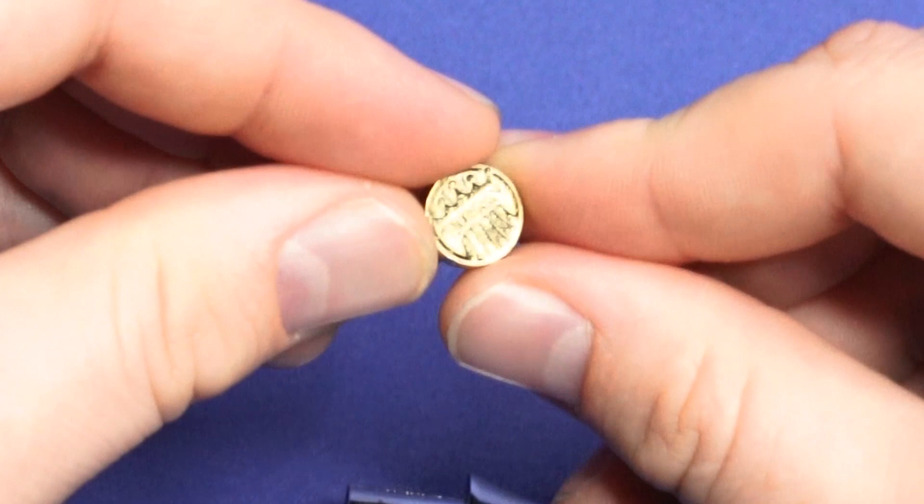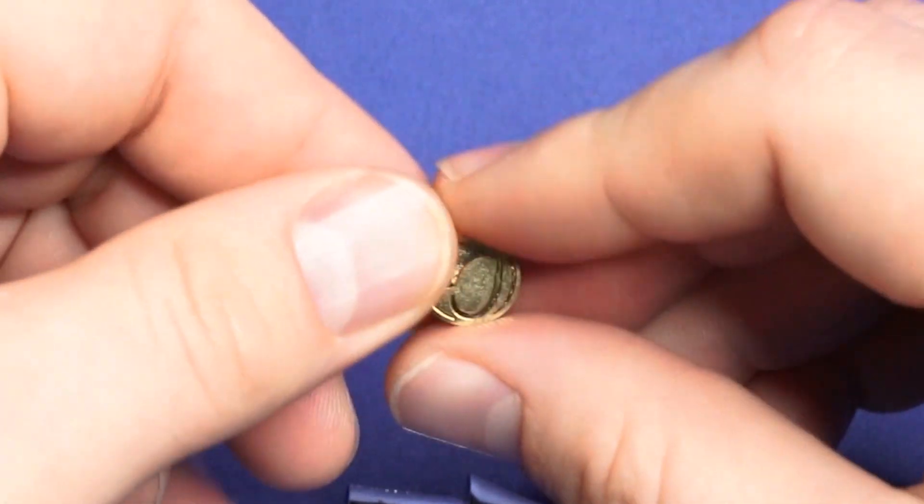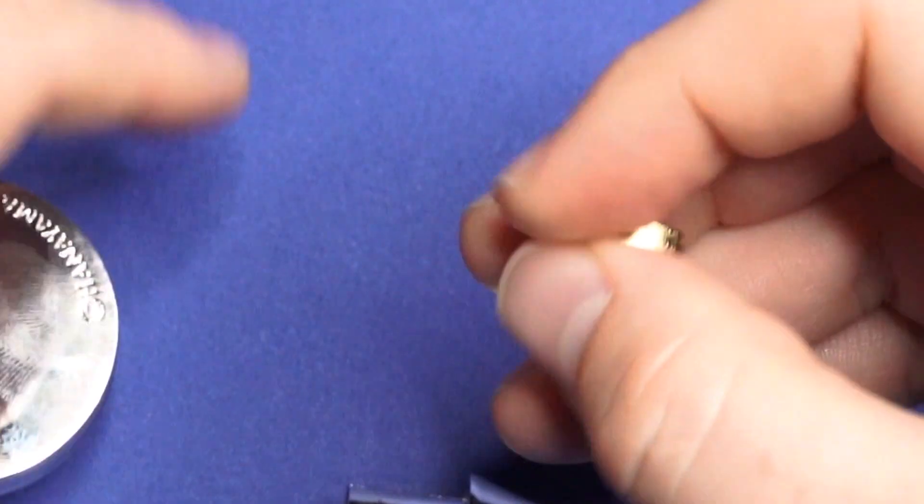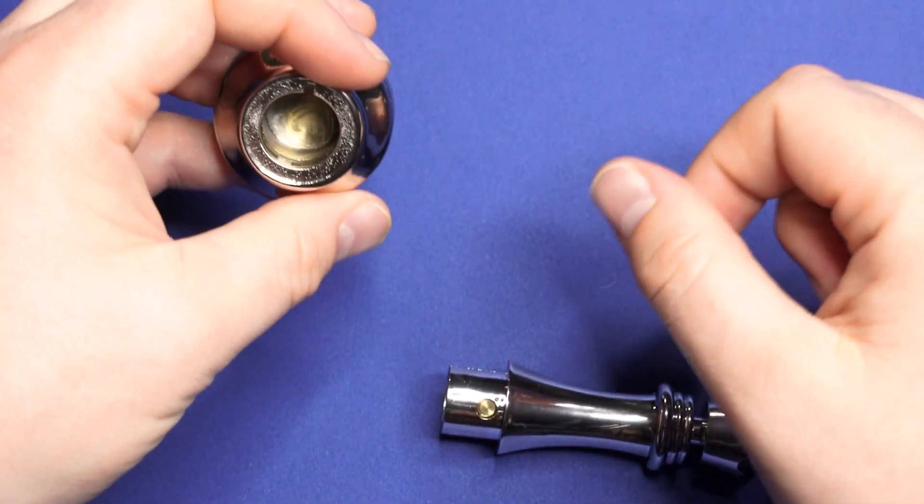Ooh, pretty. See it says Queen on it. On the other side it has a little Hanayama heart on it. Now, we have solved the Queen puzzle.